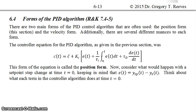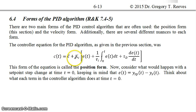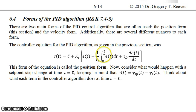The controller equation for the PID algorithm is as follows. Your controller signal as a function of time is equal to your original controller signal plus your controller algorithm, which is your proportional gain kc times the error at time t — that's your proportional part — plus 1 over tau_i times the integral of your error — that's your integral part — plus tau_d times the derivative of your error at time t, which is your derivative part.